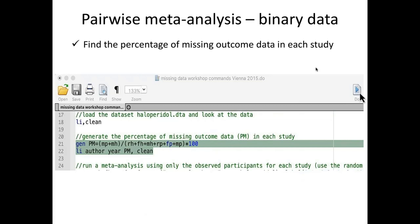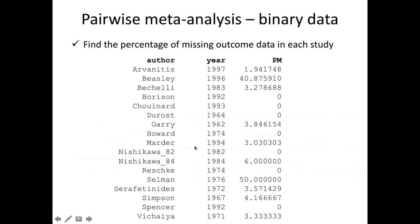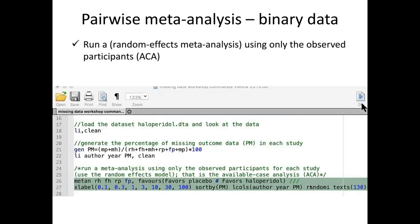MH is the number of missing participants, and we have the same data for the placebo group. Let's see the missing rate for each study. We have the Bisley study that Dimitris talked about, with a 41% missing data rate, and the Selman study with a 50% missing data rate. The other studies have much lower percentages of missing participants.